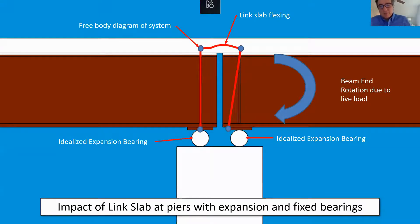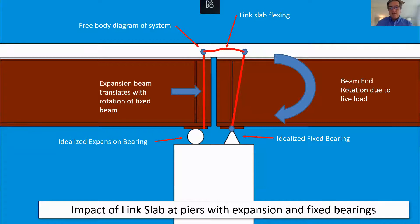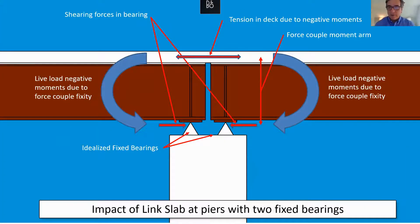Bearings are misunderstood by many. You really need to look at the bearings when doing a link slab project, especially for superstructure replacement with existing substructures. When a beam end rotates, the bottom of the beam must be able to move because you're changing the point of rotation from the bearing to the mid-depth of the slab. With two expansion bearings it works fine. With one fixed bearing it still works. However, if you have two fixed bearings at a pier, you essentially create a force couple and a near-continuous condition, which can damage bearings and anchor rods. That situation should be avoided.